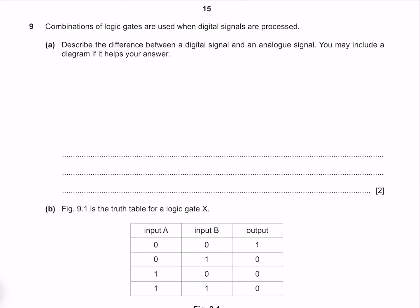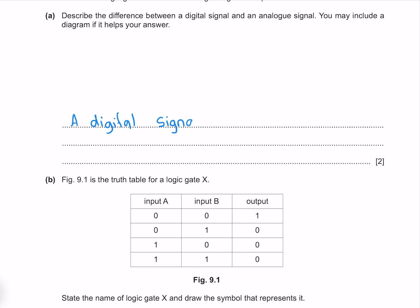Combinations of logic gates are used when digital signals are processed. Describe the difference between a digital signal and an analog signal. You may include a diagram if it helps your answer. A digital signal is coded in 1s and 0s. An analog signal has a continuous magnitude.